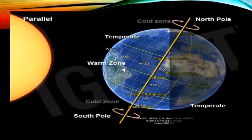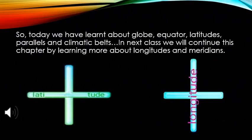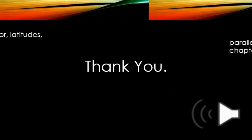This picture shows the effect of latitudes on the climatic conditions of a particular place on the globe. So today we have learnt about globe, equator, latitudes, parallels, and climatic belts. In the next class we will continue this chapter by learning more about longitudes and meridians. Thank you.